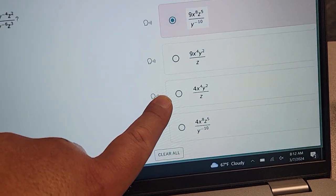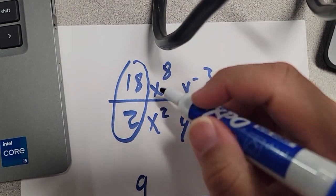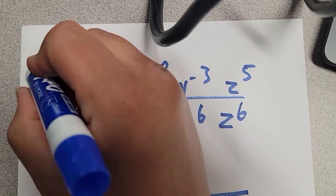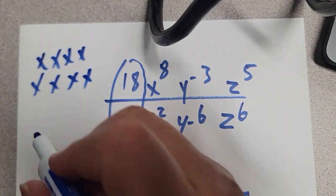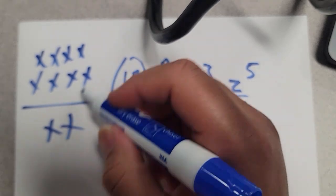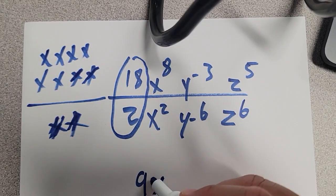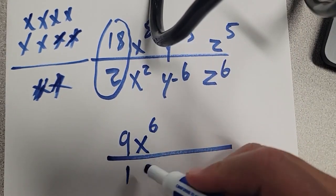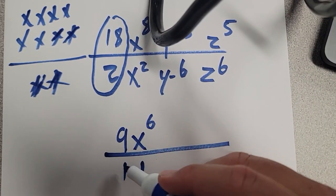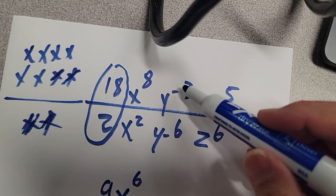Next, let's look at the letters. Think about how many x's are on the top versus the bottom. I have 8 x's on the top and only 2 x's on the bottom. The top has more, but whenever you have the same thing on top and bottom they cancel out. I have 1-2-3-4-5-6 left over, so I write x to the 6th on the top. On the bottom, after cancellation it's just a 1, and 1 times 1 is 1, so we don't worry about it.